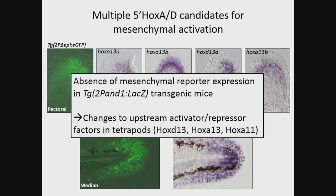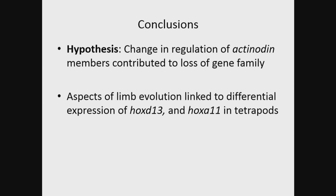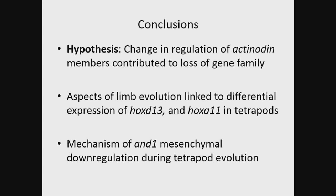Returning to the transgenic mouse results: we propose that the absence of mesenchymal reporter expression in our transgenic mice suggests changes to upstream activator and repressor factors in tetrapods. This could be changes in HoxD13, HoxA13, and HoxA11. Several aspects of limb evolution have already been linked to differential expression of HoxD13 and HoxA11 in tetrapods. We propose that these tetrapod-specific expression patterns may be a mechanism of AN1 mesenchymal down-regulation during tetrapod evolution.